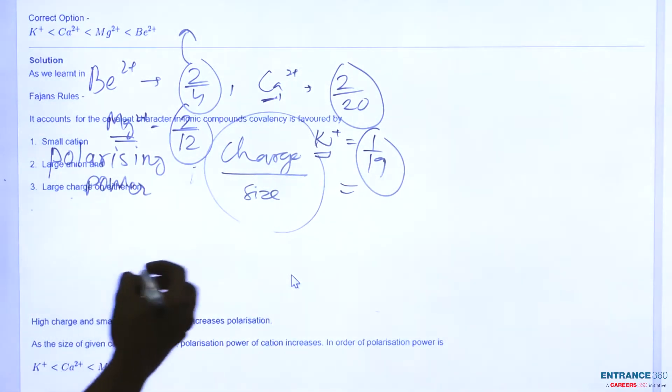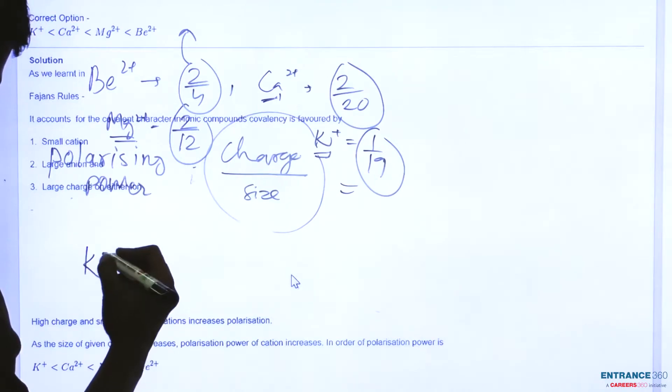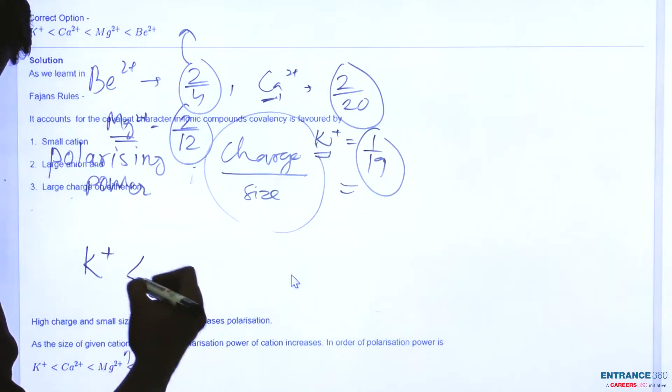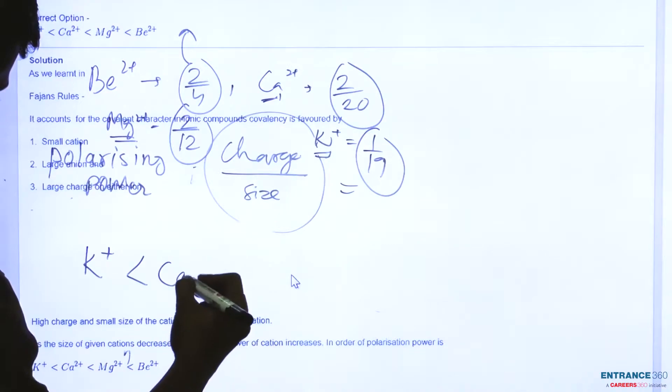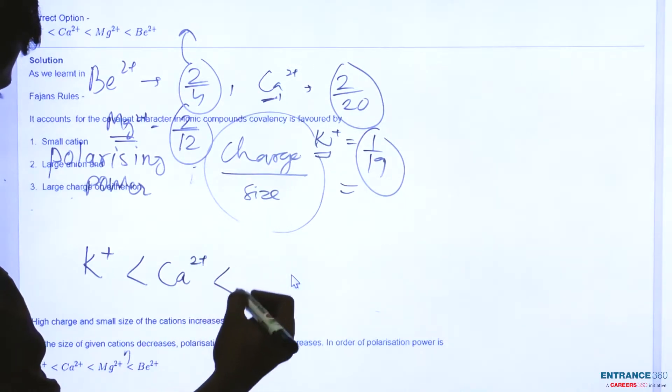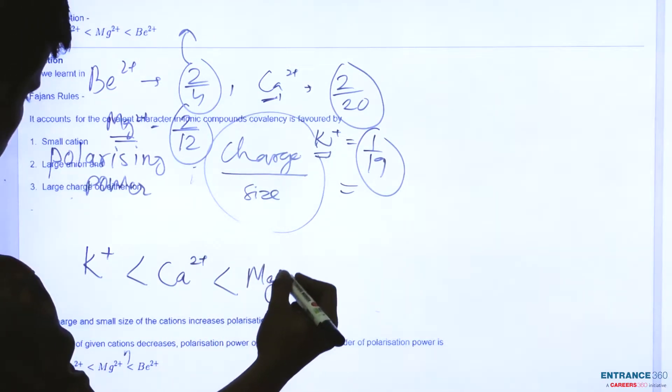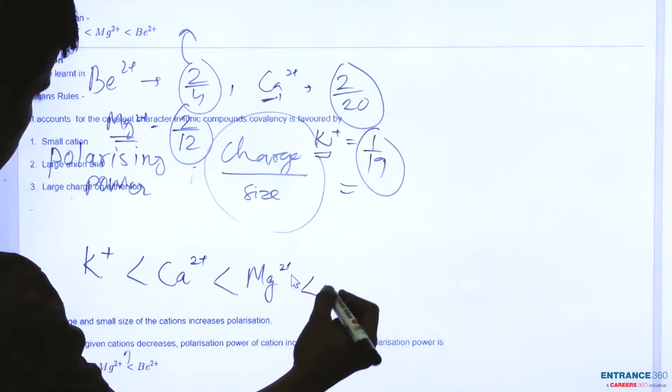So the order will be K+ is the least, then Ca2+, then Mg2+, then Be2+.